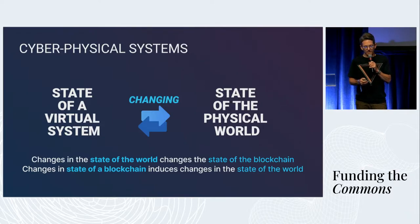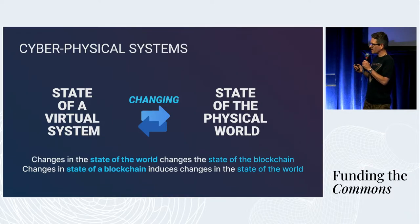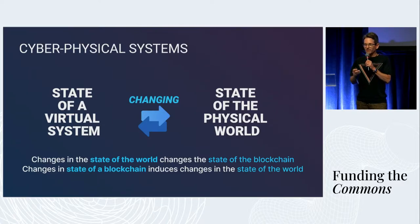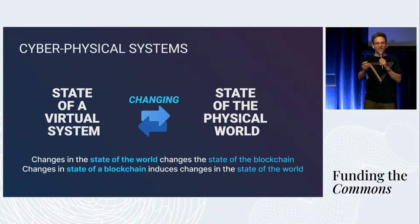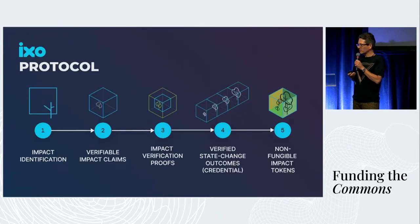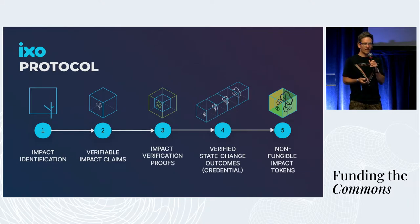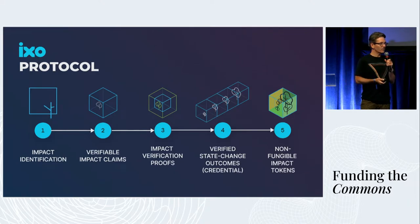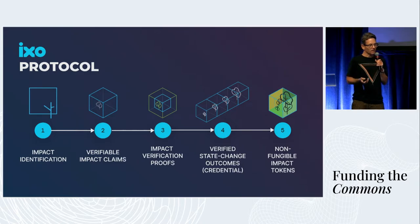And this is where we need to look at how we make it adaptive so that it is linked to reality. What's the interface between state changes on chain and state changes in the real world? The basis of this — I'm going to talk a little bit about the data side of things — feeds in really powerfully to the impact certificates story.